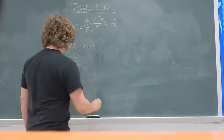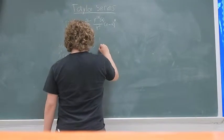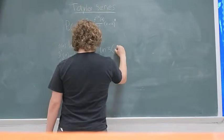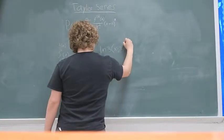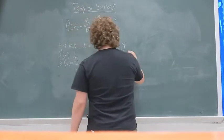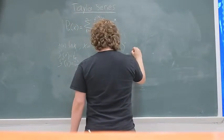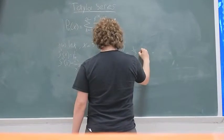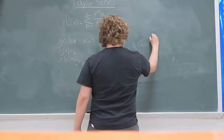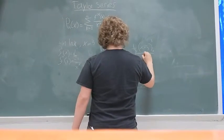Alright, so now we can start plugging these in. So you'll have, for the first term, ln of 3 times x minus 3 to the 0 over 0 factorial. Then you get plus 1 over 3 times x minus 3 to the 1st over 1 factorial.